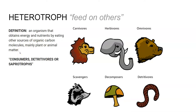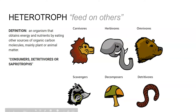There are a number of different types of heterotrophs. Among consumers, you can divide them into carnivores that eat only meat, herbivores that eat only plants, and omnivores that can eat both meat and plants. There are also scavengers that tend to eat dead things after they've been killed, as well as decomposers and detritivores.